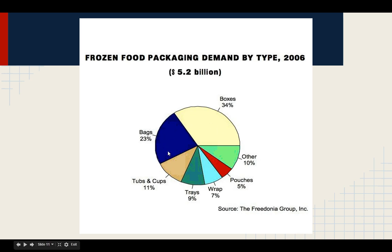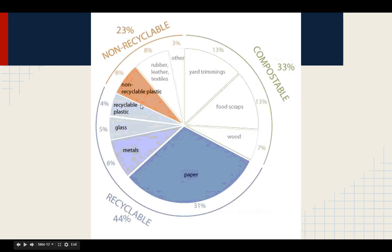Hopefully, these bags are made of recyclable plastic, along with the boxes. This picture shows what's recyclable and what's not. We're getting close to 44% of the materials used for packaging being recyclable. Some are compostable — they break down. But we still have 23% of non-recyclable products — non-recyclable plastic, rubber, leather, textiles, and other things. When you think about how much we consume in our daily lives, that's still a lot of waste that's not good for the environment.